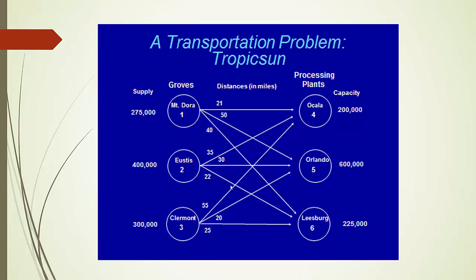Before we move on, I want to point out one thing. Let's look at the supply side. The total supply available from the three groves is 275,000 in location 1, 400,000 in location 2, and 300,000 in location 3 — so the total amount of supply is 975,000 bushels. The total processing capacity is the sum of 200,000, 600,000, and 225,000, which equals 1,025,000 bushels — greater than the total amount of supply.